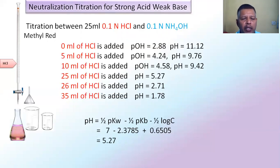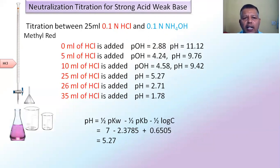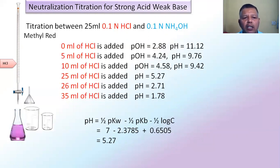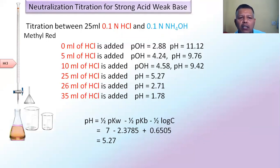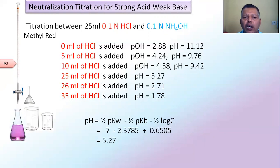For neutralization titration of weak acid and weak base, no single suitable indicator exists. We must use a mixture of two indicators to observe the color change, because since both are weak, the pH does not start from a very low or very high value. The equivalence point, neutralization point, and end point of the titration all fall in a narrow range. Bromothymol blue indicator may be used, but a sharp color change is not observed. For this reason, two indicators must be used together.